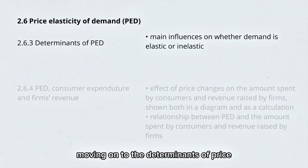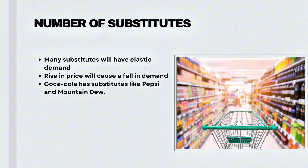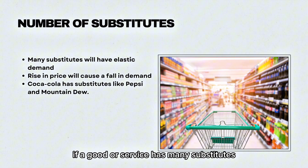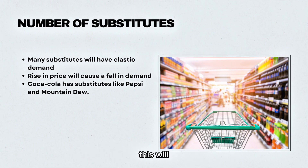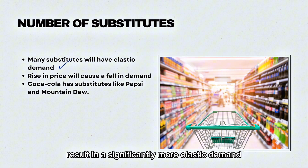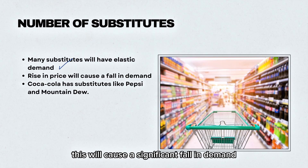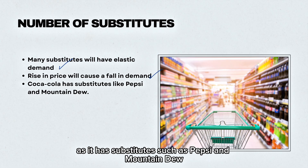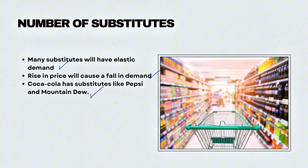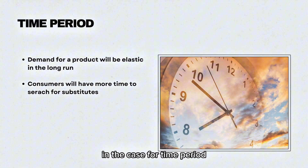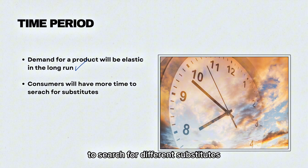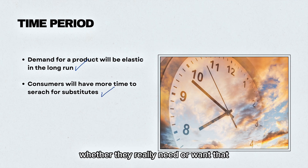Moving on to the determinants of price elasticity of demand. If a good or service has many substitutes, this will result in a significantly more elastic demand, so if a company decides to raise their price this will cause a significant fall in demand. Some examples include Coca-Cola, which has substitutes such as Pepsi and Mountain Dew. In the case of time period, demand will be elastic in the long run as consumers will have more time to search for different substitutes and to reflect whether they really need or want that good.